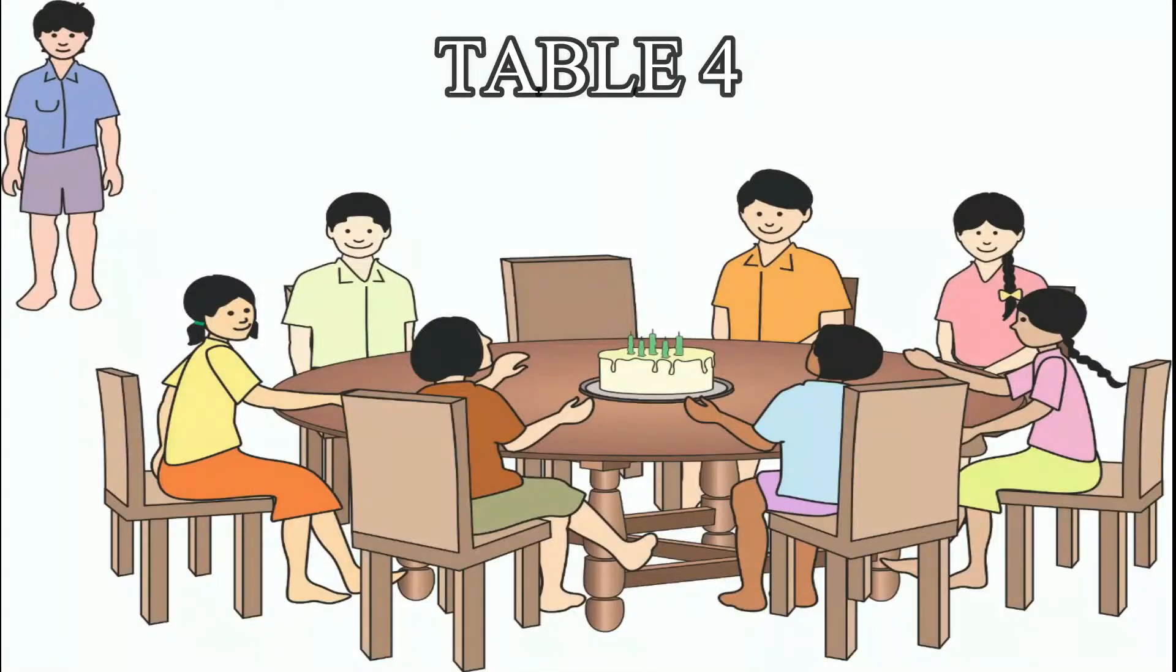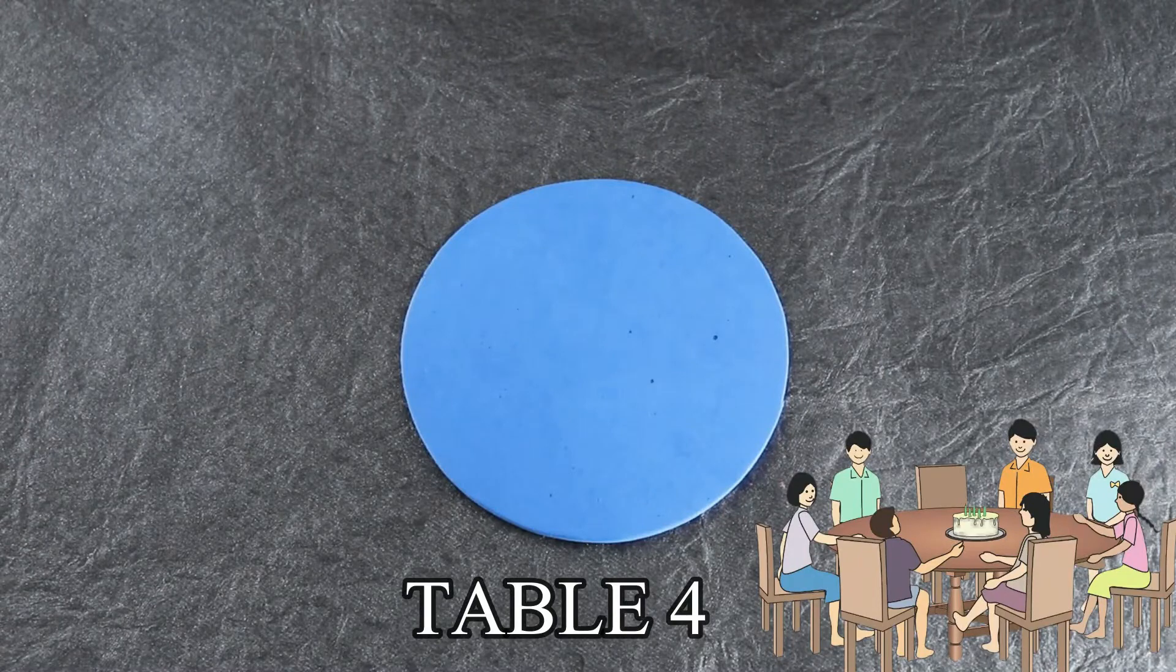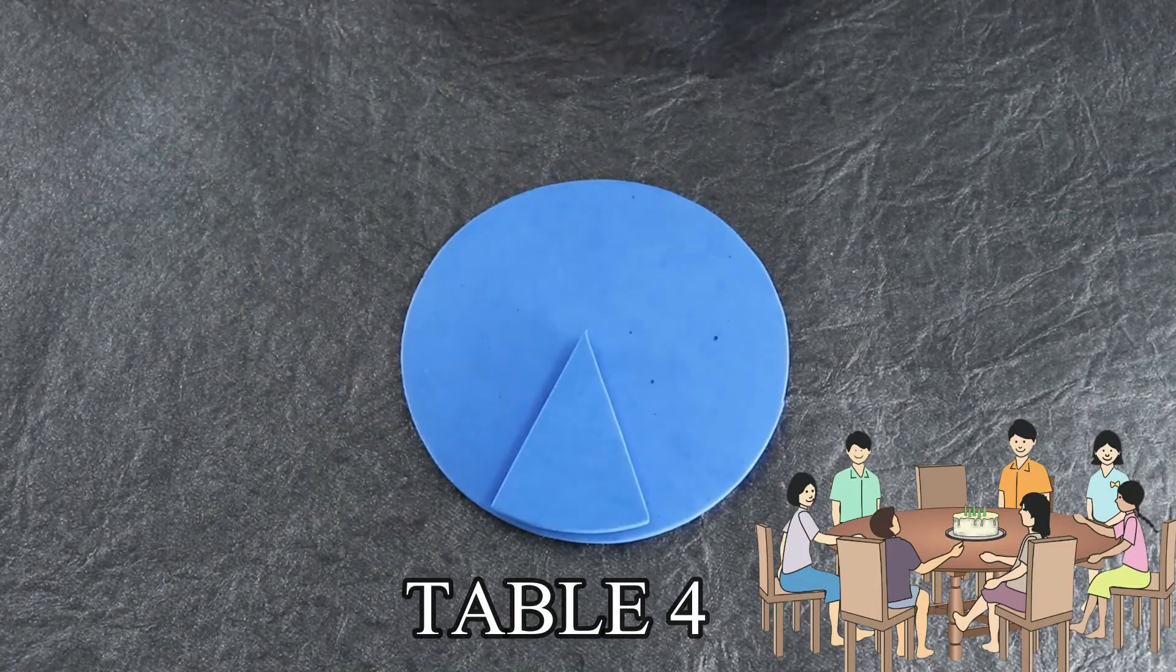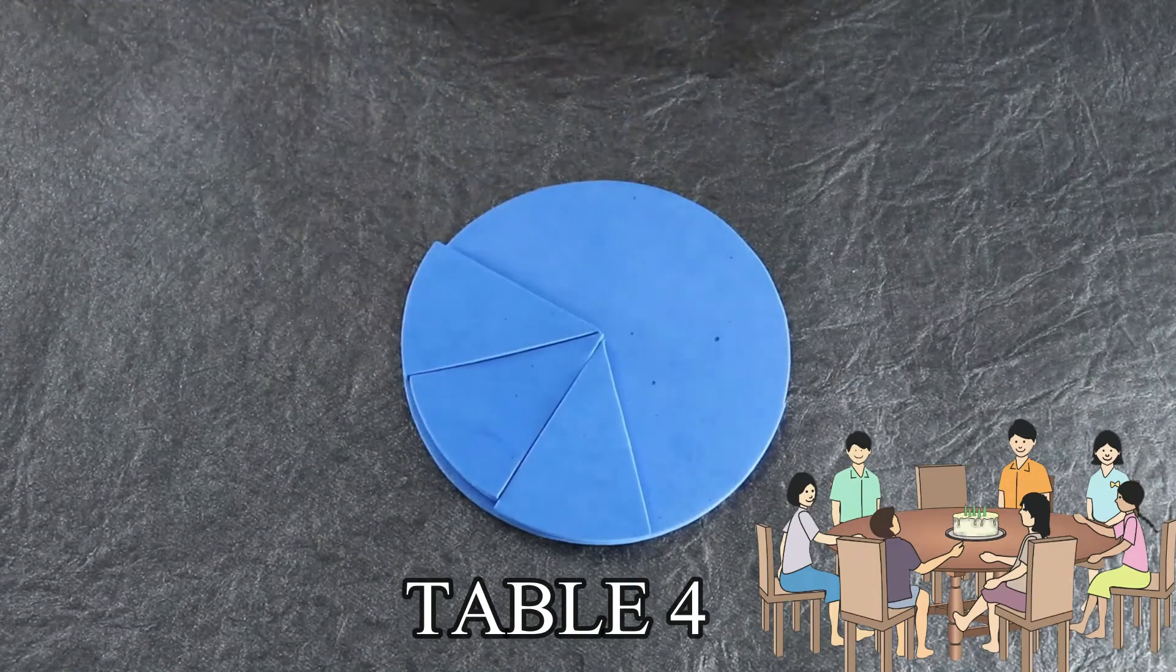At table 4, there are seven friends and Arun will be the eighth one. Arun thinks that the cake will be divided into eight parts if he goes to table 4.